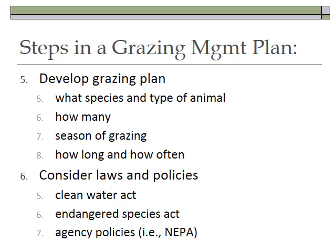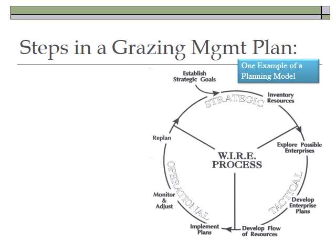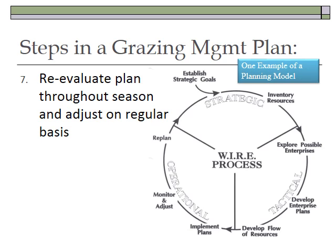Once you've established goals, know your resources, and explored possible enterprises, develop the grazing plan — that's the tactical side. Make sure you have the resources needed to implement it. Then monitor and adjust: is the plan working? Re-plan if it's not. The last step in any grazing management plan is to re-evaluate from season to season, every year, before, during, and after animals are out there, to make sure you're meeting the plan's goals. Bottom line: it's not a prescription — it's an adaptive management approach.